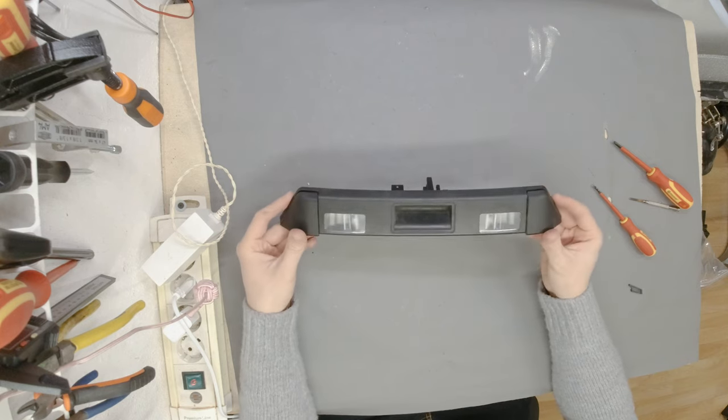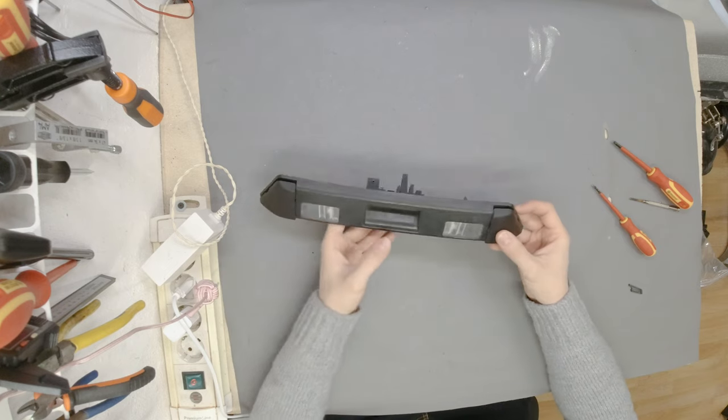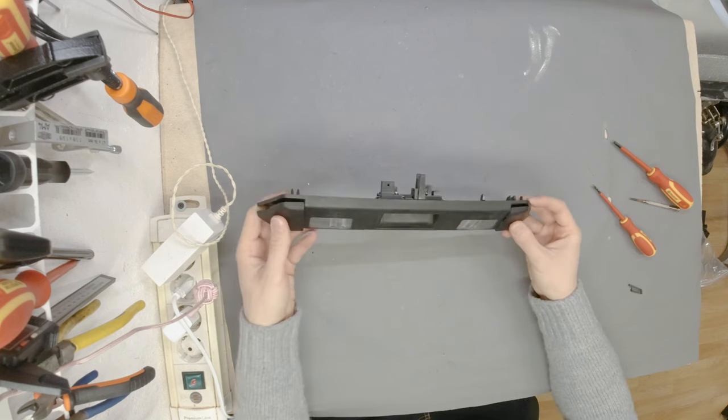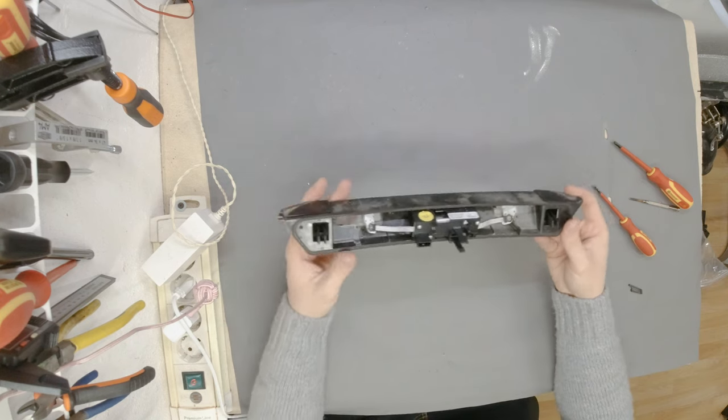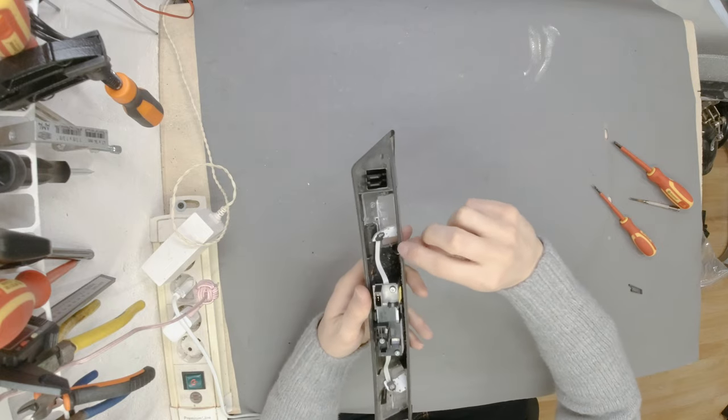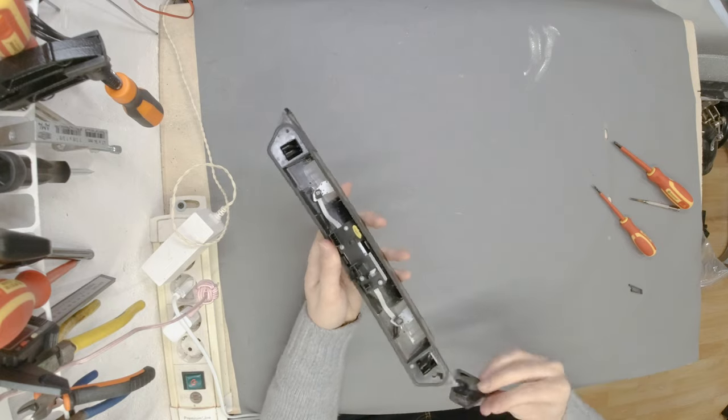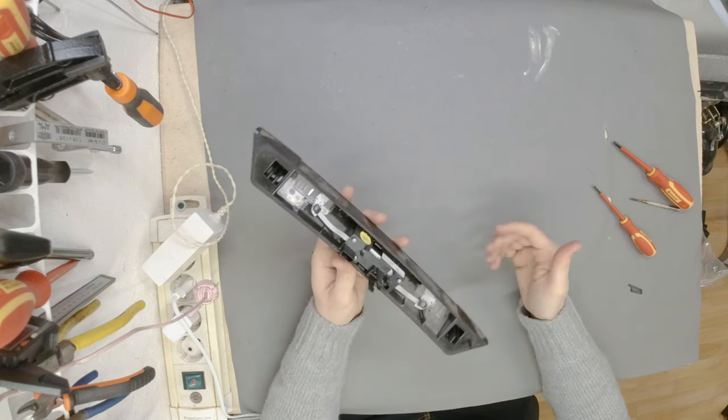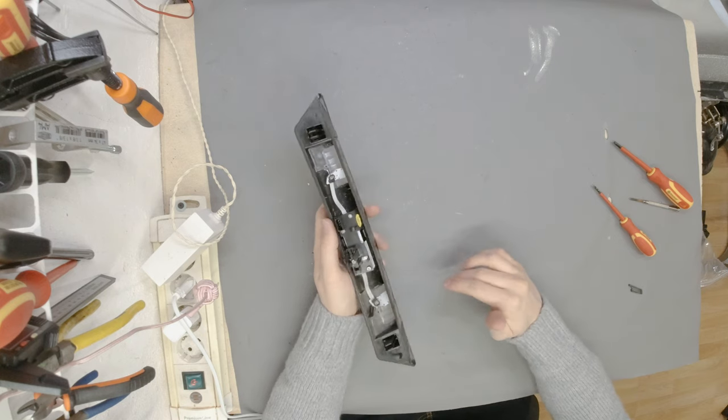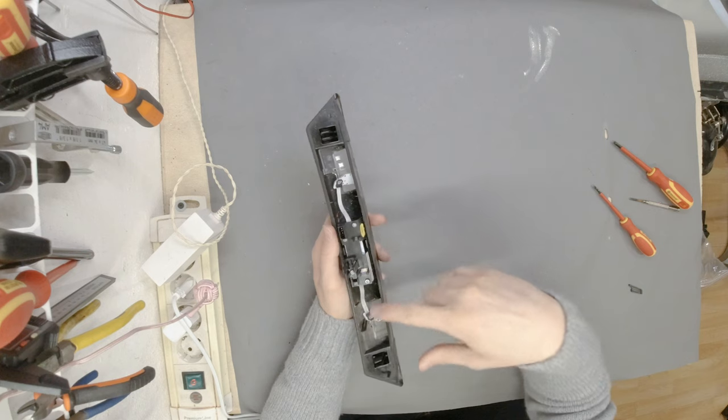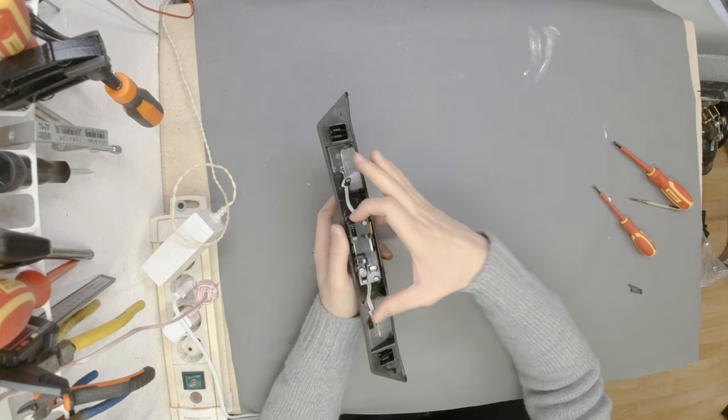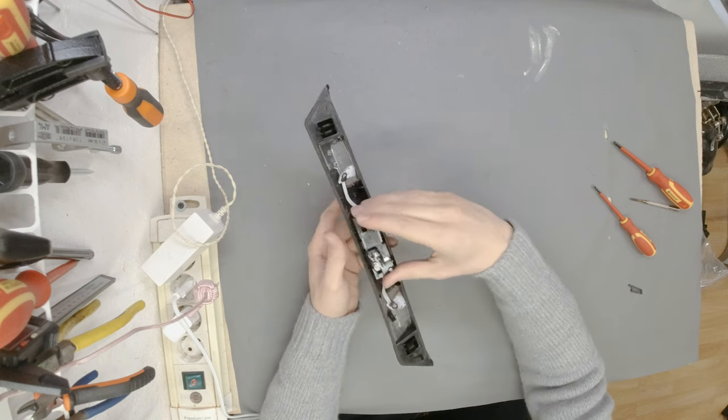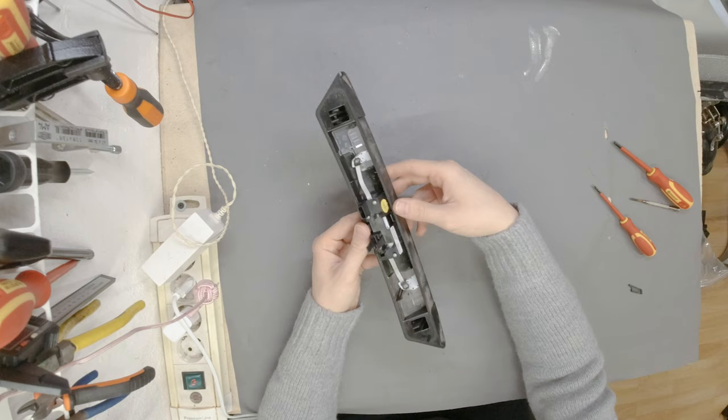I'm going to explain what the issue is. This is a license plate light and trunk or boot opener button. Even though it has a rubber grommet or sealant on the sides, water that goes under the spoiler finds its way into this area through the hole which houses the cables.